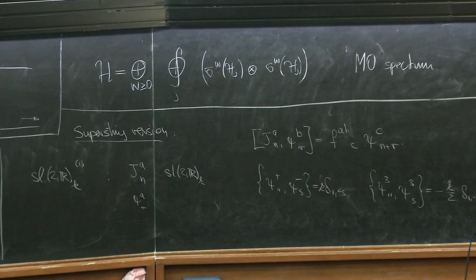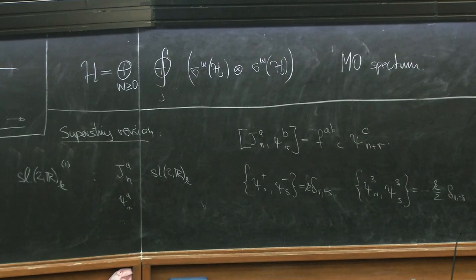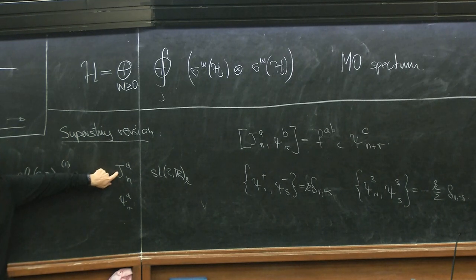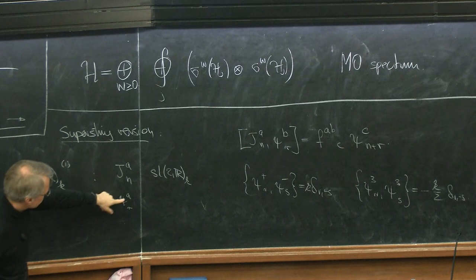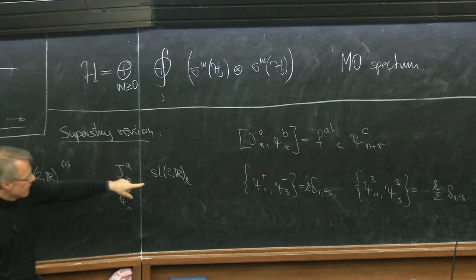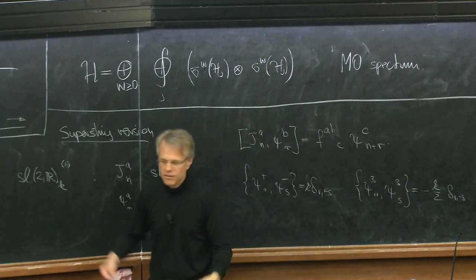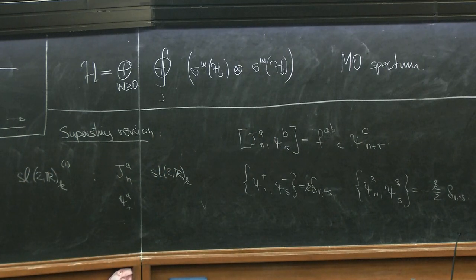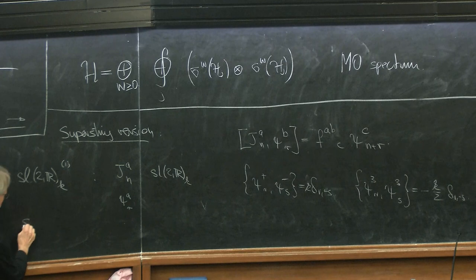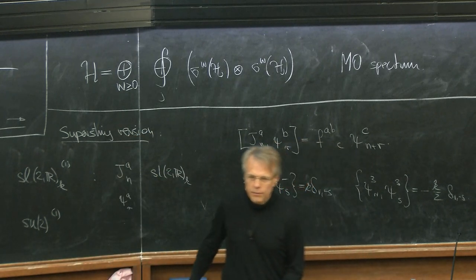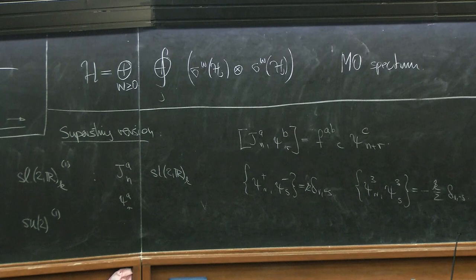Going to the superstring basically means replacing the bosonic algebra SL2R by the supersymmetrized version — this is like NSR formalism where for each boson dX^μ you add the fermion ψ^μ. The fermion has the same labels, sits in the adjoint, transforms under the bosons in the adjoint, and is a free fermion. That's the SUSY version for ADS3. Then you do the analogous thing for SU2: enhance the SU2 level K' affine Kac-Moody algebra by adding fermions in the adjoint of SU2 with analogous commutation relations. And then there is T4.